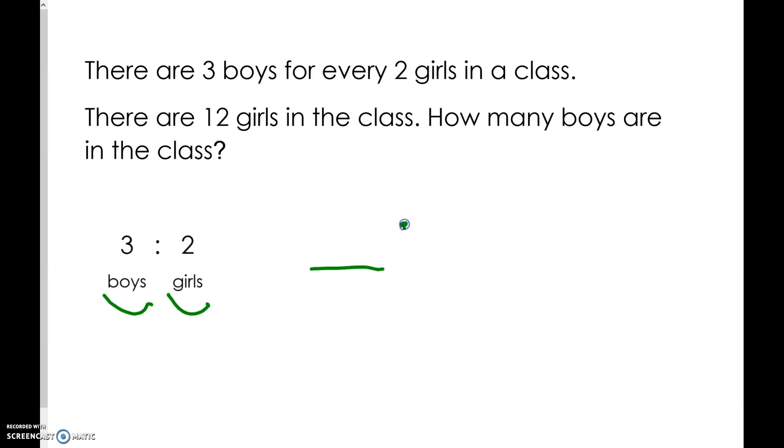To make our new ratio, let's remember girls are second. There are 12 girls in the class. Just like when we find equivalent fractions, we must multiply both numbers by the same amount. To go from 2 to 12, we multiply by 6. Therefore, we multiply 3 by 6 to find the number of boys. 3 times 6 is 18, so the new ratio is 18 to 12.